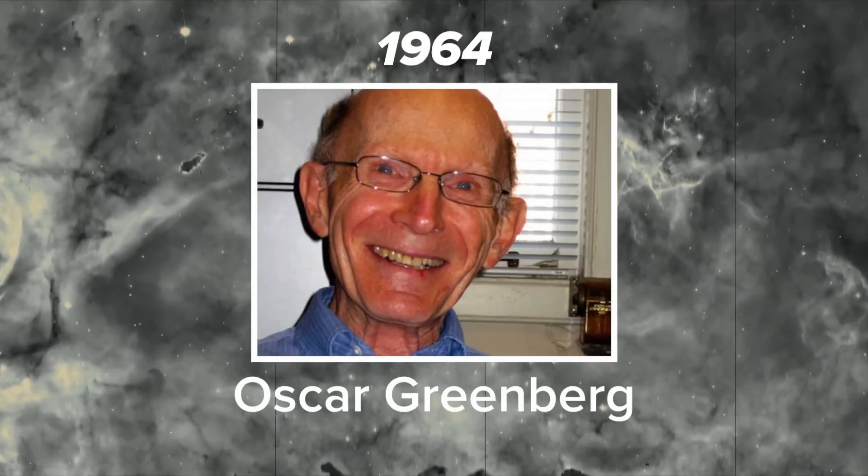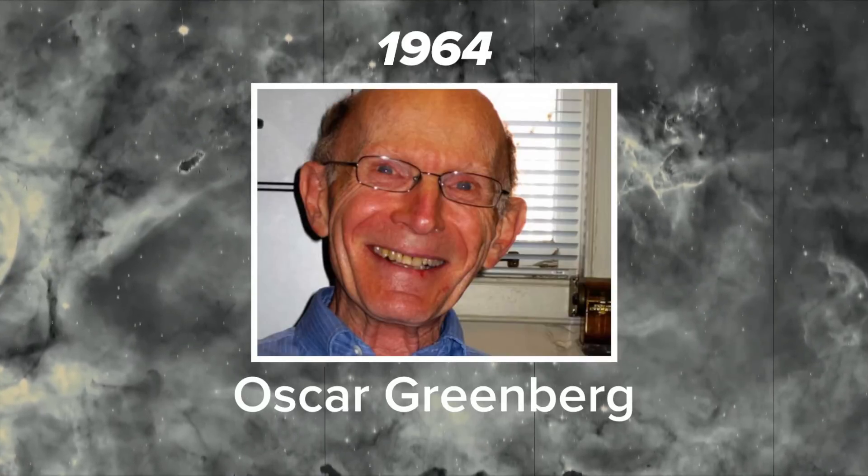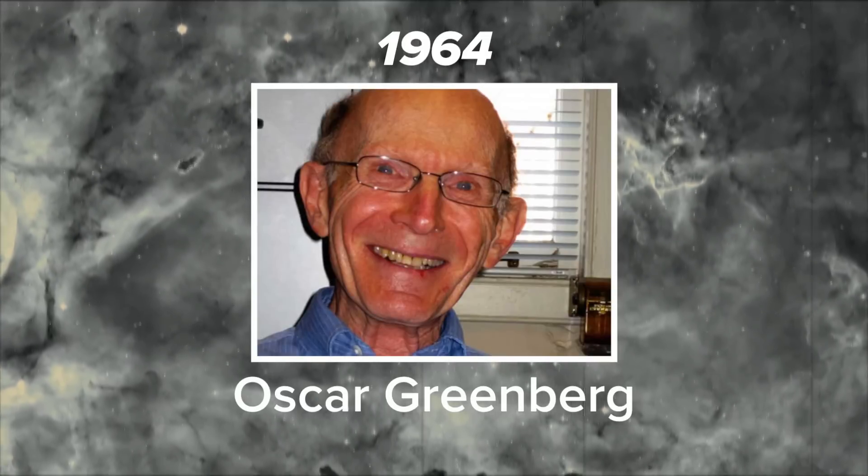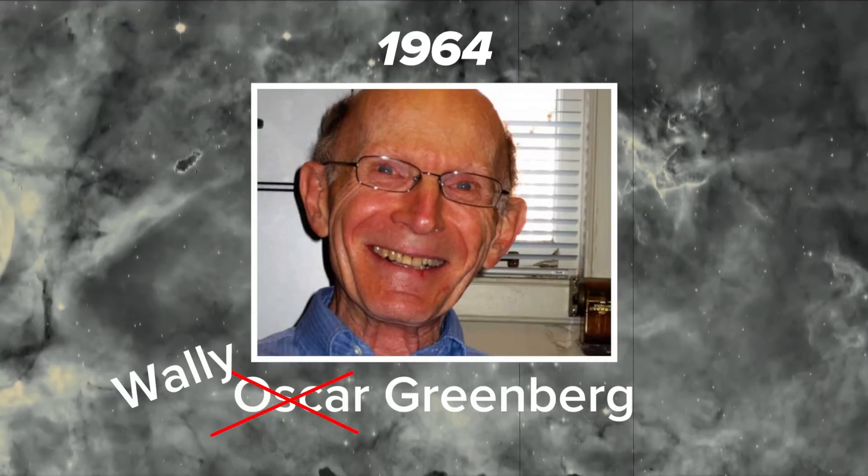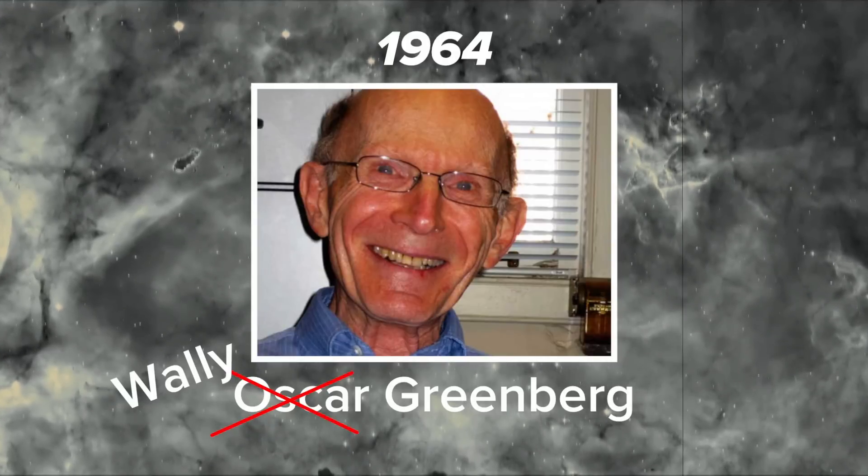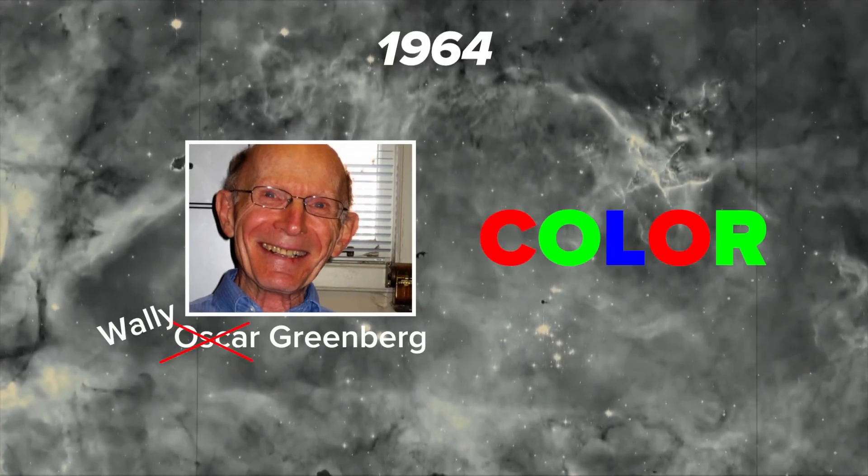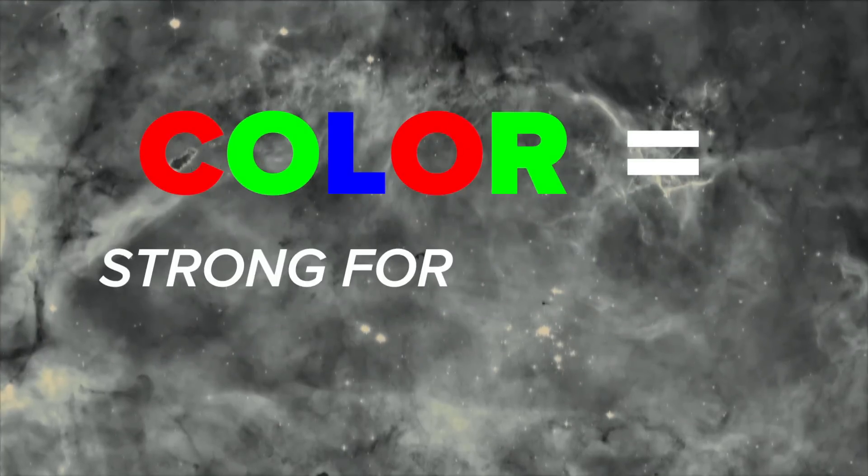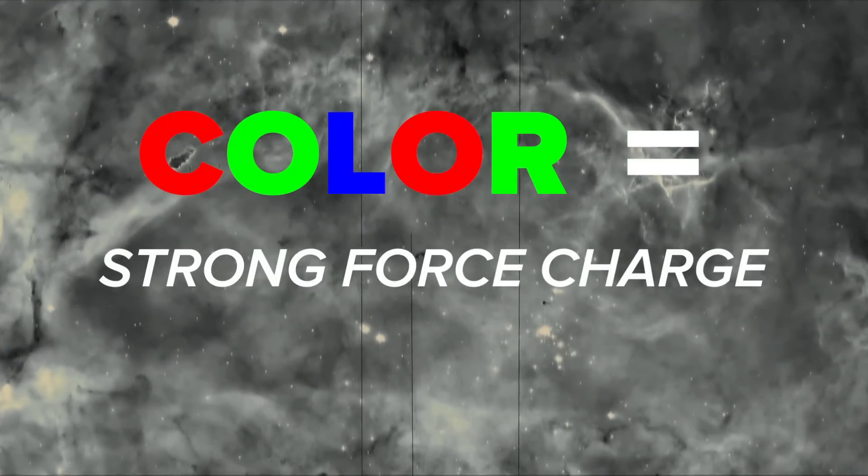In October 1964, an American physicist named Oscar Greenberg, although he prefers to be called Wally, supposed that perhaps each quark had another property that we now call color. Color, by the way, is the name that we use for the strong force charge, but we're getting ahead of ourselves.